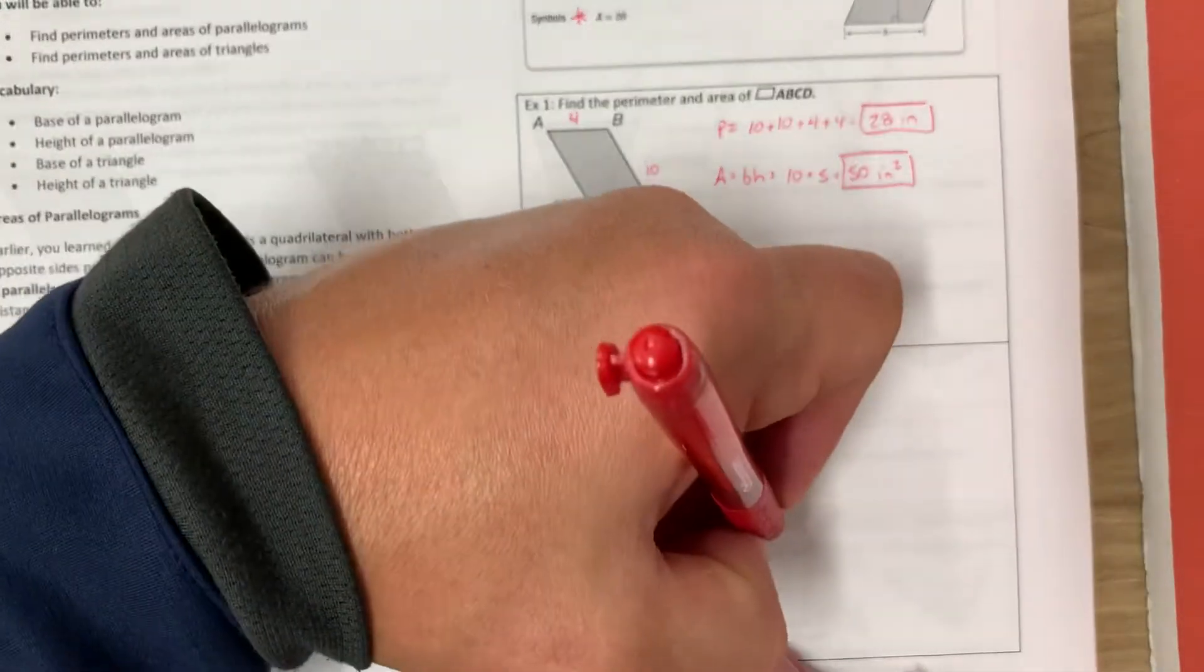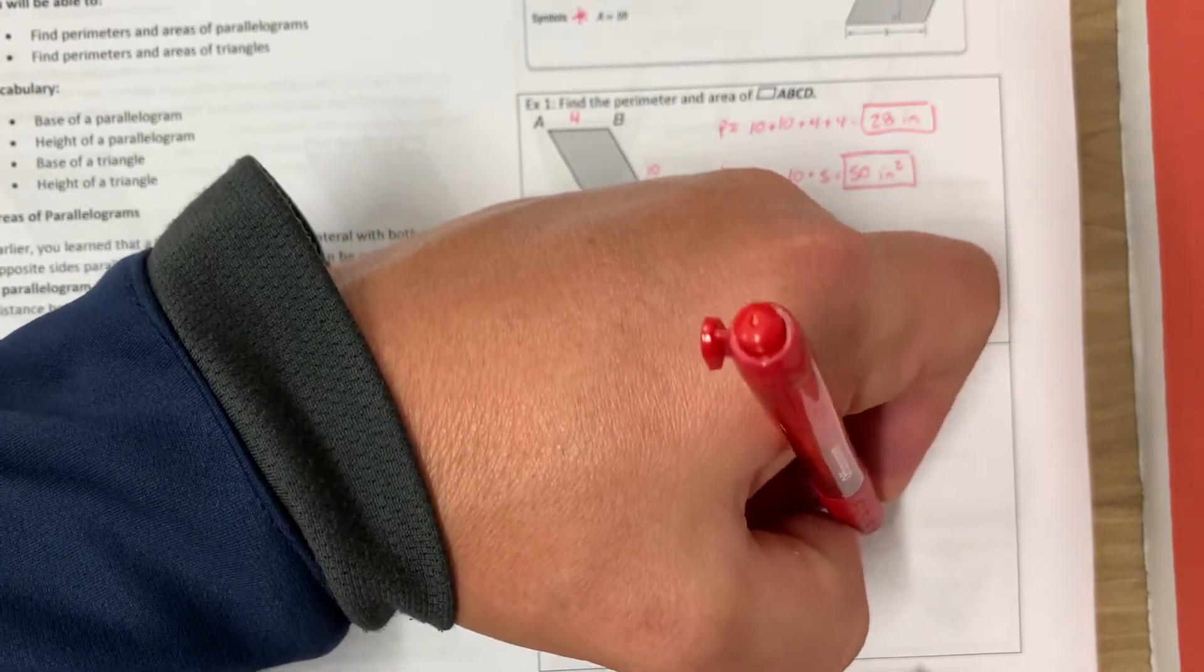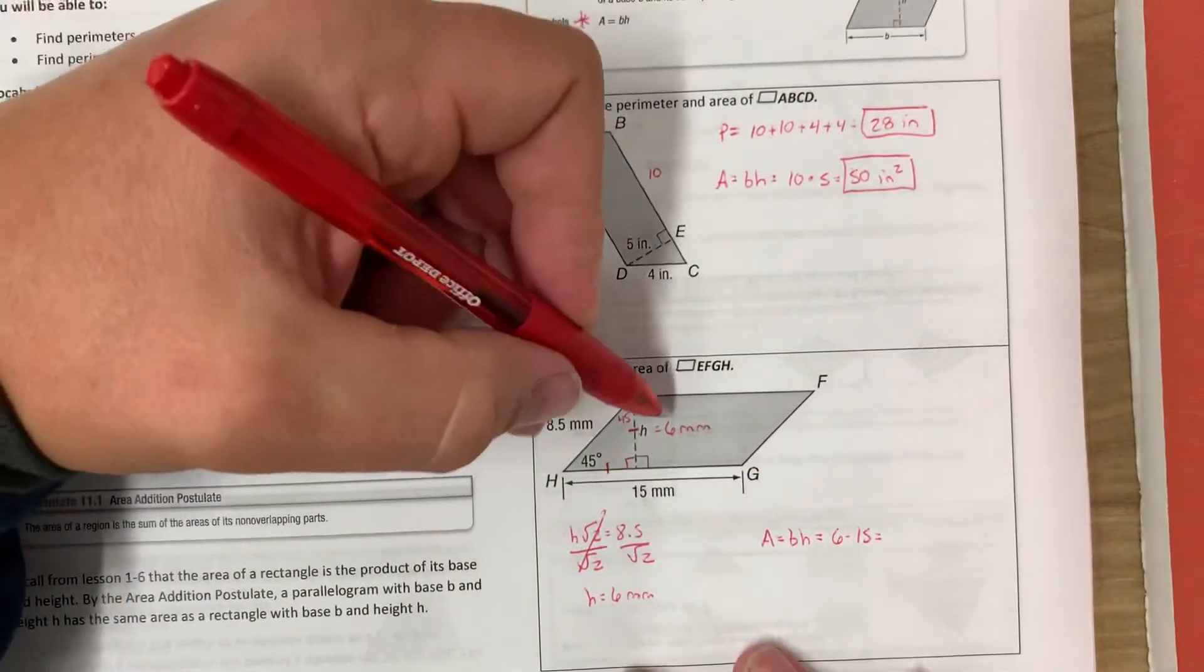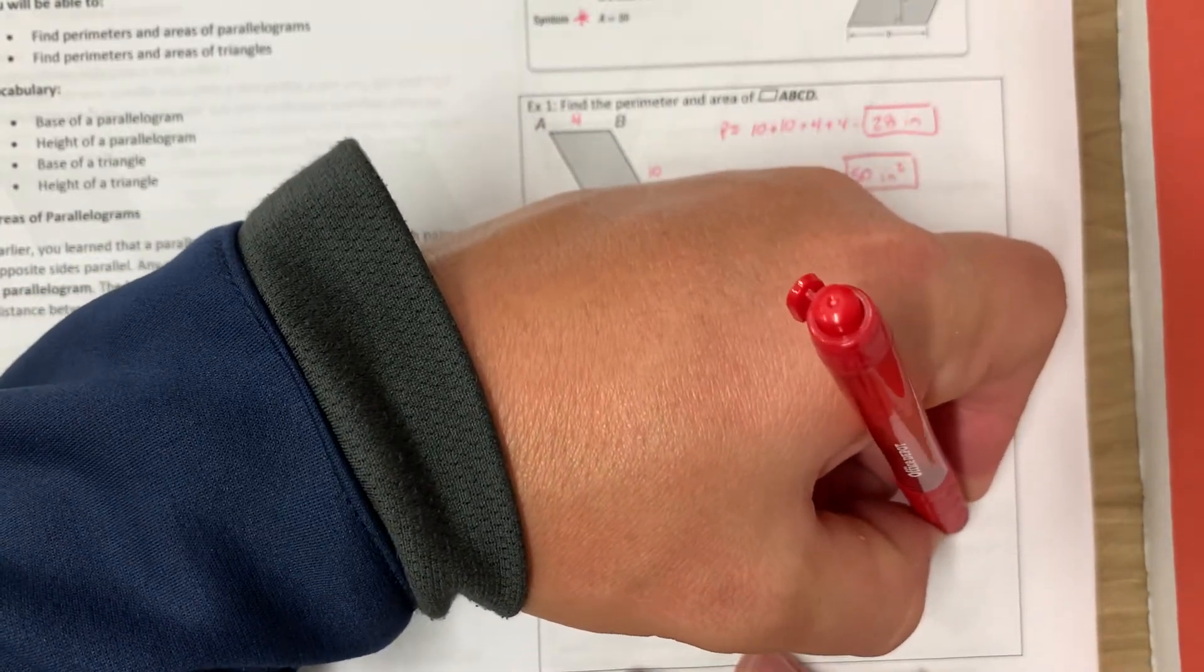So to find the area, area is still base times height, which would be 6 times 15, which is 90 millimeters squared.